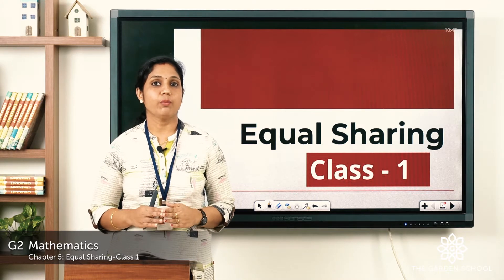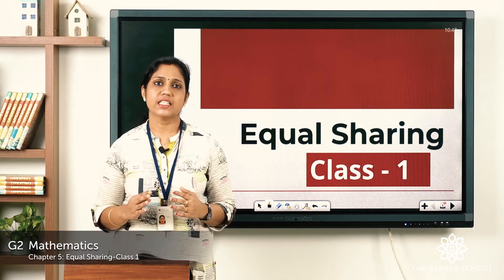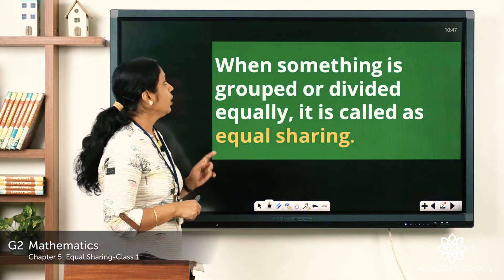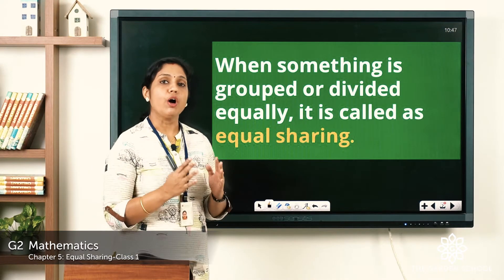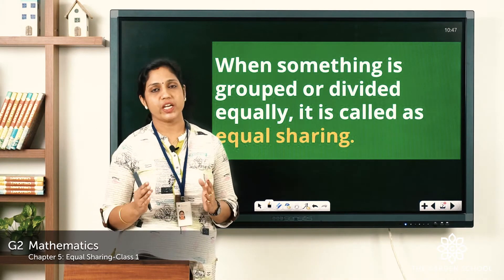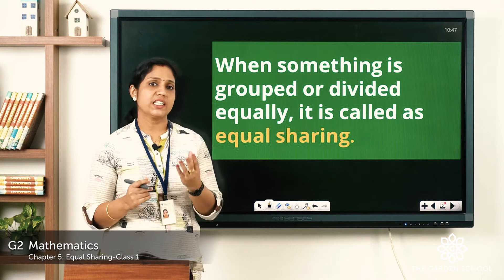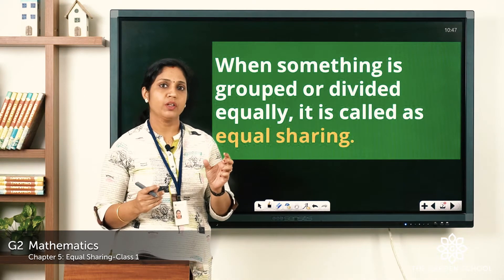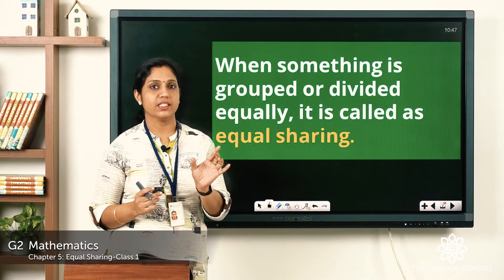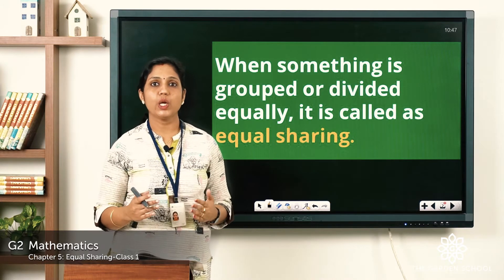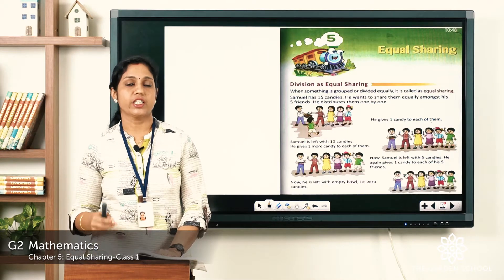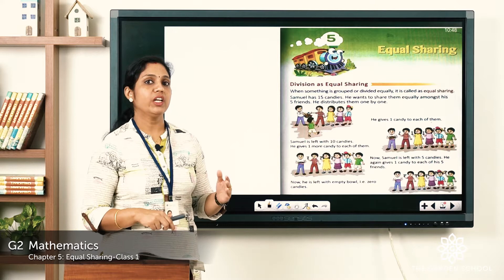So today we are going to learn about equal sharing. When something is grouped or divided equally, it is called equal sharing. In each group there must be an equal number of things. Open your textbook to page number 63.